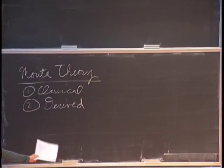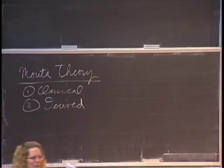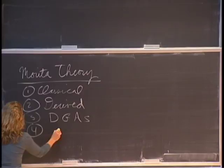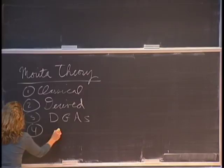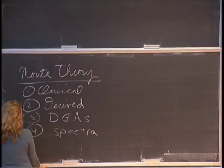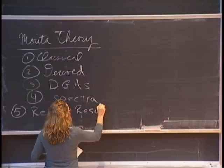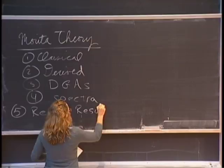As I was saying, I suppose if you don't have a chair, it's okay if you go. So I'm going to be talking about Morita theory in a classical setting for rings, in a derived setting for rings, then for differential graded algebras, and finally for spectra. That's my introduction to Morita theory. And then part five, which is a little bit different, I'll talk about some recent results which use Morita theory.